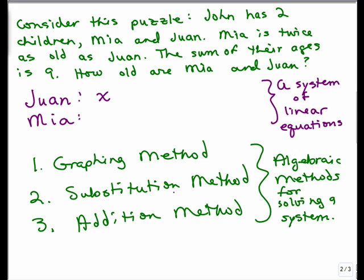In previous equations that you might have made up to solve applications like this, you would write Mia in terms of X. But since we know how to work with two variables, I'm just going to say Mia's age will be Y.